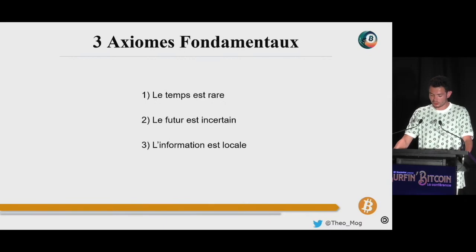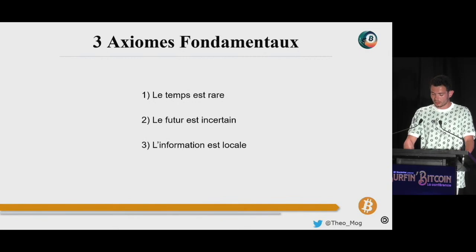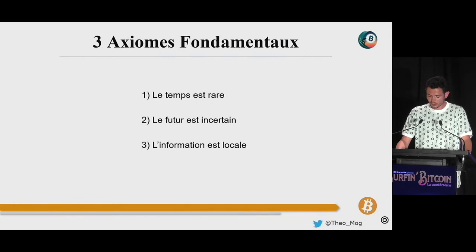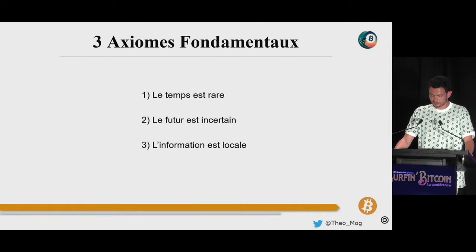Autrement dit, nos désirs présents sont toujours prioritaires à nos besoins futurs. C'est en gagnant de la certitude sur notre subsistance à court terme que nous pouvons penser au moyen terme, voire au long terme. À cet égard, la propriété apparaît comme une institution sociale fondamentale. En effet, plus les droits de propriété sont acceptés dans une société, plus nous avons la possibilité de sécuriser notre condition présente et de nous orienter vers l'avenir. Cette valorisation relative du futur par rapport au présent est ce que les économistes autrichiens appellent la préférence temporelle.